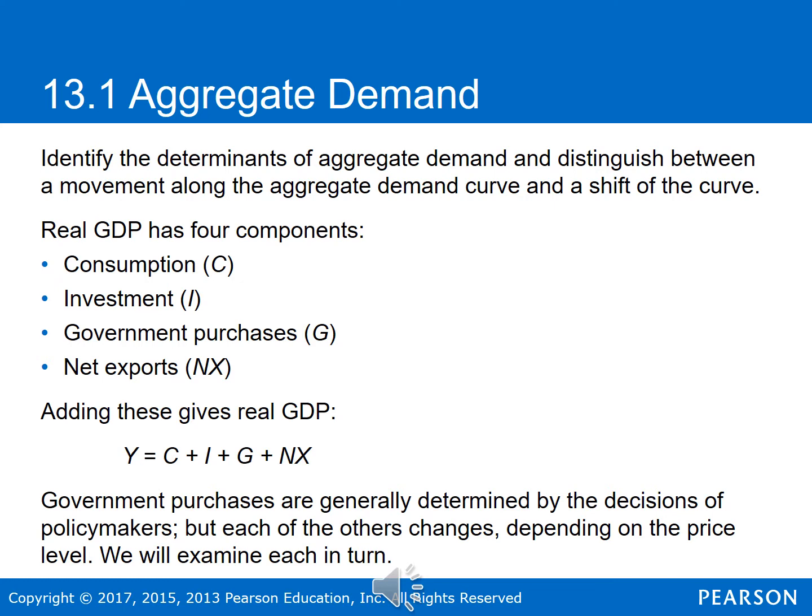Remember, real GDP has four components: consumption, investment, government purchases, and net expenditures. When we add the four of these up, that gives us real GDP. The aggregate demand curve is downward sloping because a fall in the price level increases the quantity of real GDP demanded. To understand why, we have to look at how changes in the price level affect each component of aggregate demand.